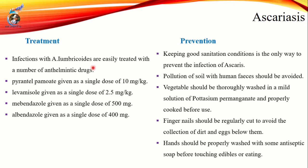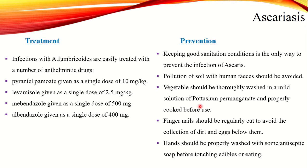What are the preventions? The first thing is to maintain hygiene — if we maintain hygiene, it can be prevented. Sanitation should be proper, and we should avoid polluting soil with human feces. Vegetables should be washed well, ideally with a mild potassium permanganate solution. Proper hand washing with antiseptic soaps is essential. These are all precautions to avoid Ascariasis.